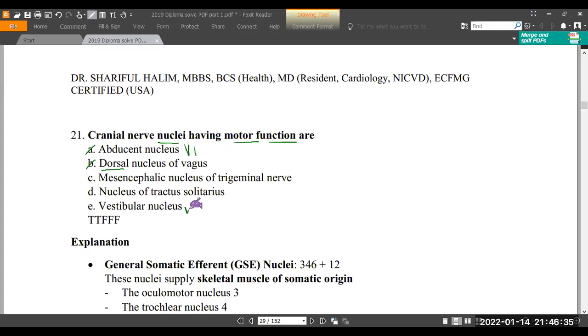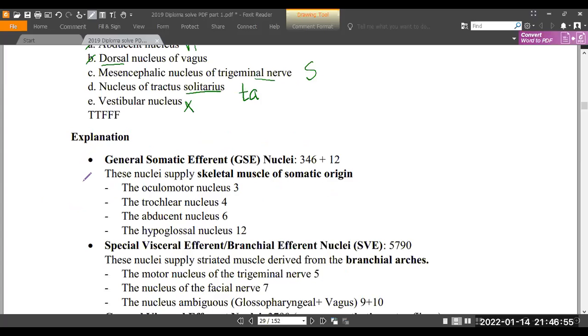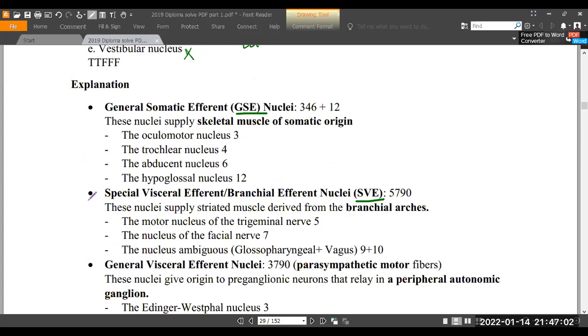The vestibular is for sensation - position sensation and balance, that's sensation category. The tractus solitarius terminates for taste sensation category. The mesencephalic nucleus of the trigeminal nerve probably carries facial sensation. So it's a sensory nucleus. There are general somatic efferent nuclei, special visceral efferent nuclei.